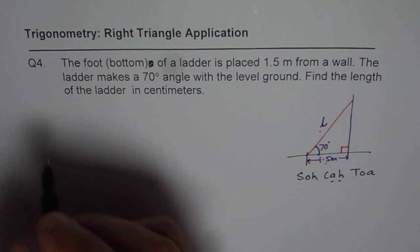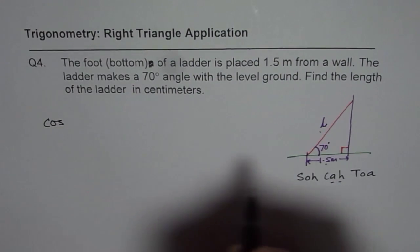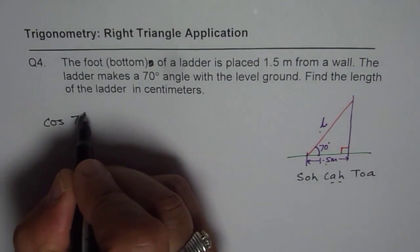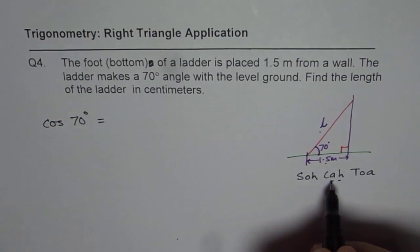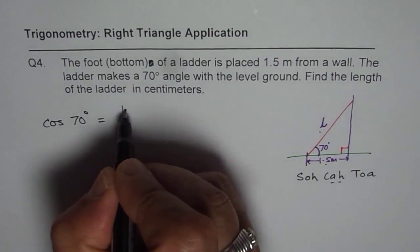Now so we have to use cosine. So we say cos of what angle? 70 degrees. Is equal to adjacent side is 1.5 meters, 1.5. There is no harm in writing units alone.